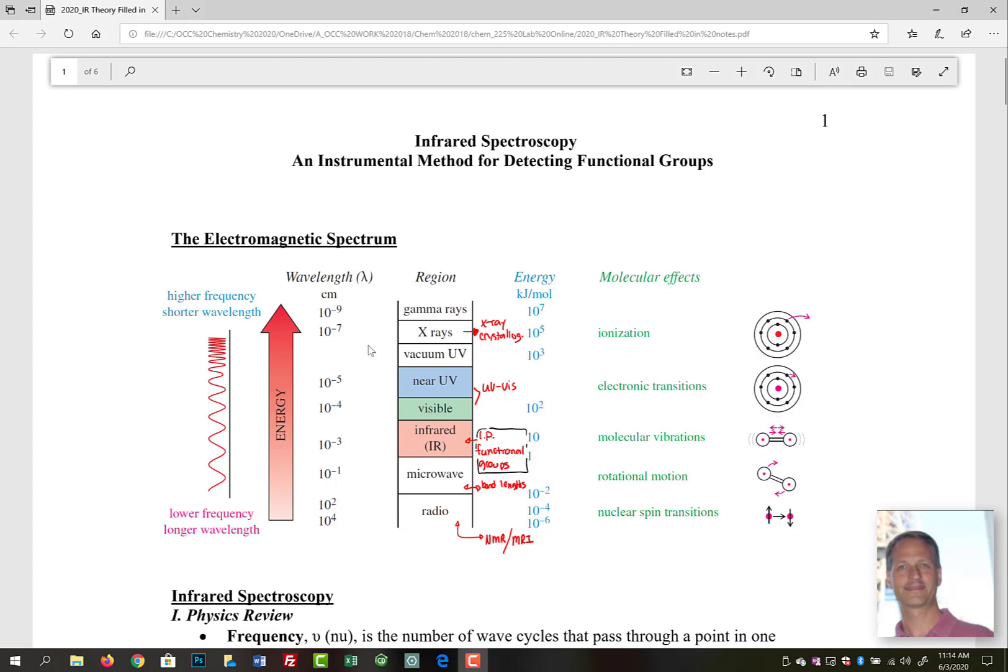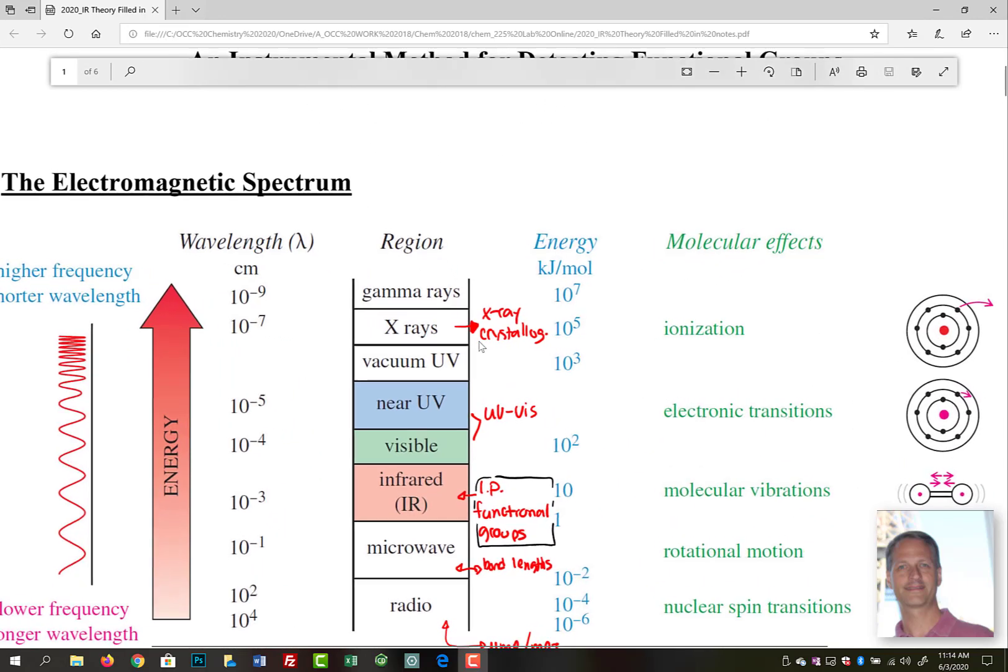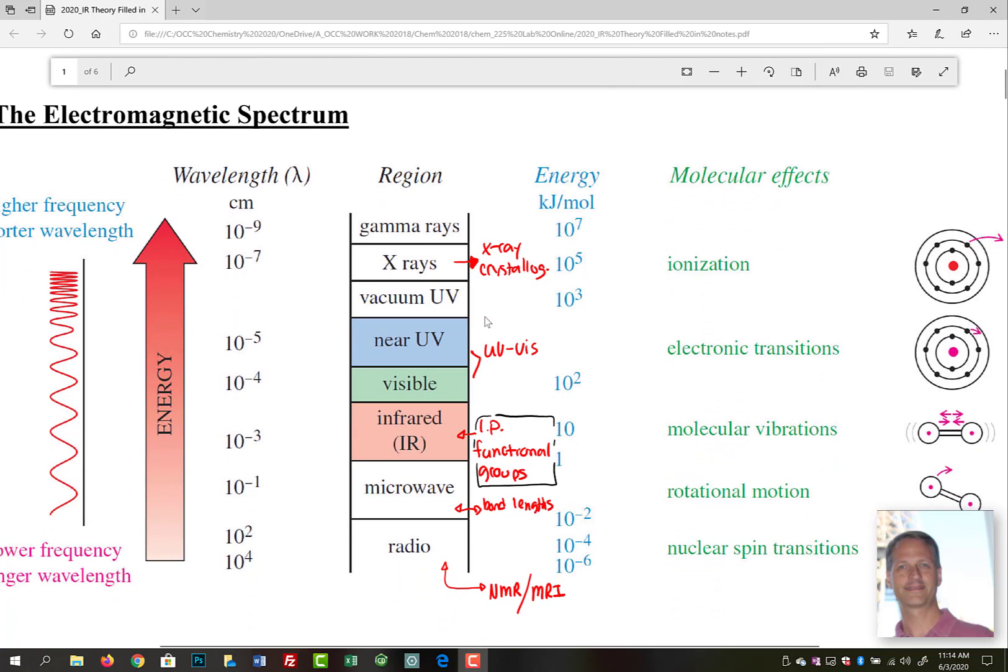We're all familiar with the electromagnetic spectrum here. We have higher frequency at the top and lower frequency at the bottom. Gamma rays ranging down to lower energy radio waves. For x-rays, we have x-ray crystallography used to get good images of proteins and enzymes. We have ultraviolet spectroscopy, which we'll talk about in more detail later. Infrared is where we're going to identify functional groups. Microwave radiation is often used to determine bond lengths, and radio waves are used in nuclear magnetic resonance, NMR or MRI.